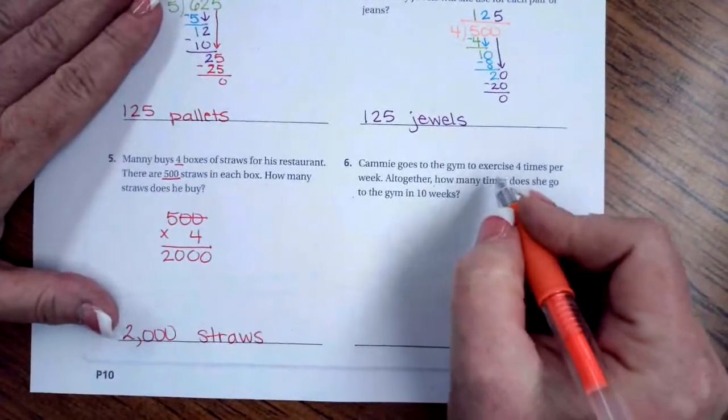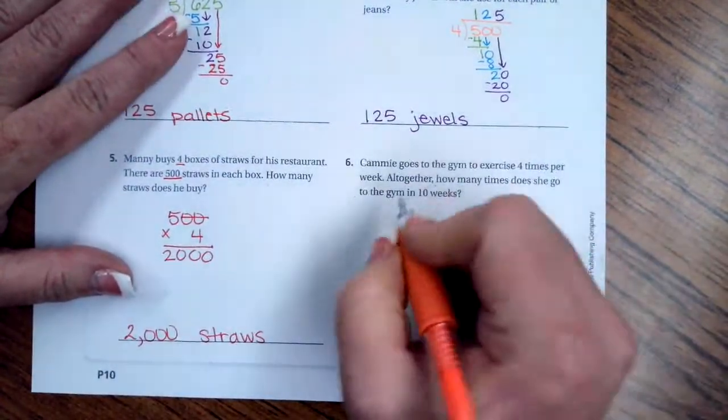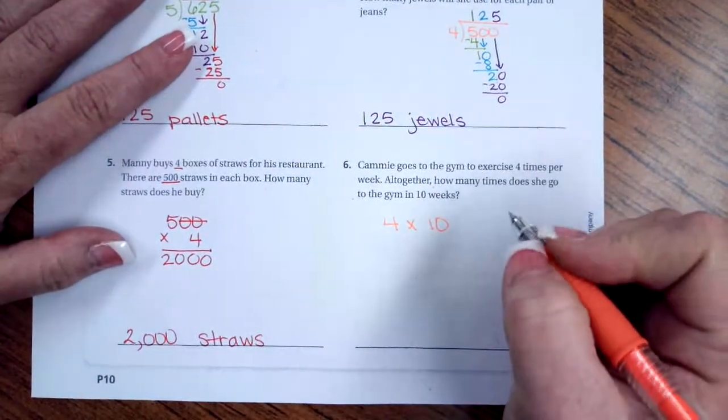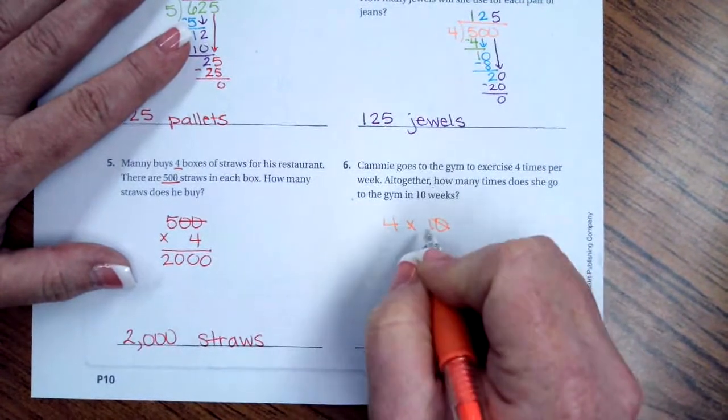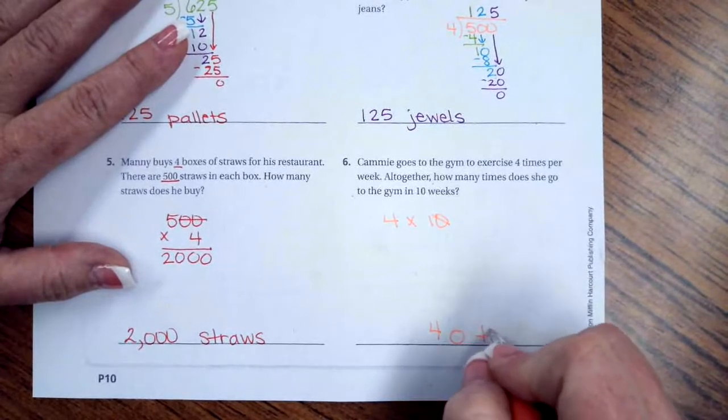Cammie goes to the gym to exercise four times per week. Altogether, how many times does she go to the gym in ten weeks? So we have 4 × 10, which I know everybody knows is 40, but we're just going to take that zero off and put it on the end, and then 1 × 4 = 4, so that is 40 times.